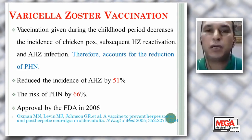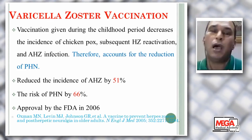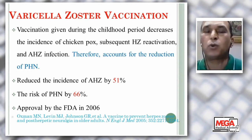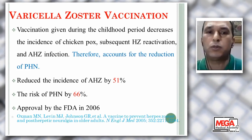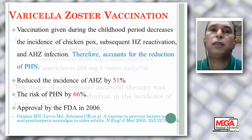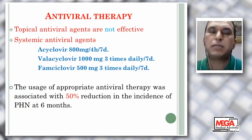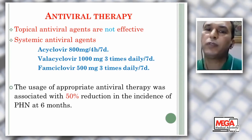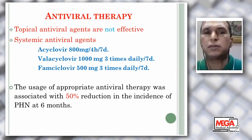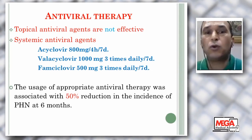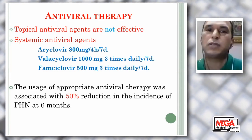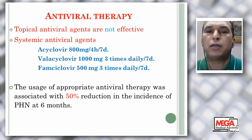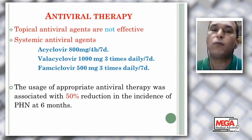We can use vaccination for children and booster doses for elderly patients who are susceptible to acute herpes zoster, such as immunocompromised patients, patients on steroids or chemotherapy. Topical antiviral therapy is not effective, but systemic antiviral therapy is effective. We can use acyclovir, valacyclovir, and famciclovir. Duration of treatment is seven to ten days if there is new eruption. Acyclovir must be started in the first three days of eruption at a dose of 800 mg five times per day. Appropriate antiviral therapy was associated with a 50% reduction in the incidence of post-herpetic neuralgia at six months.